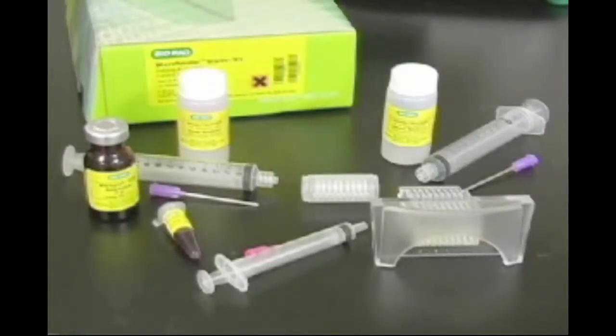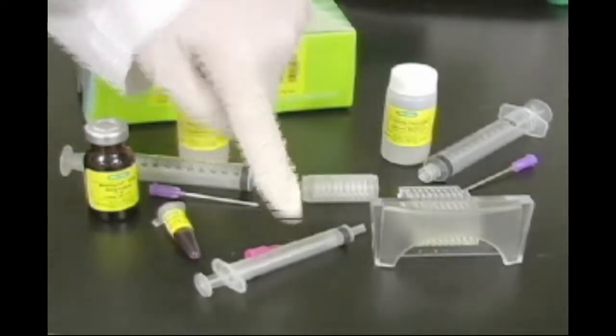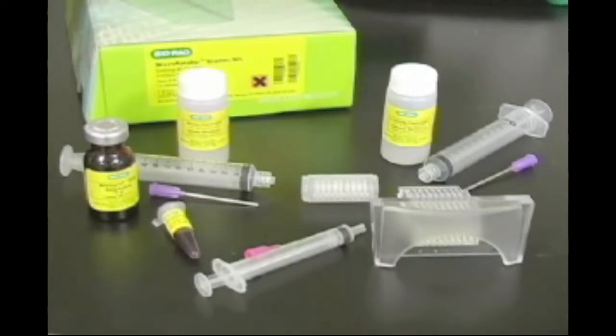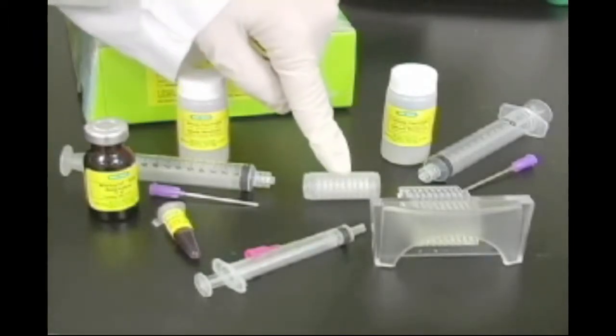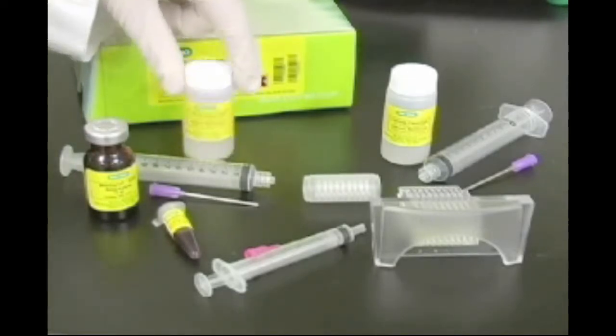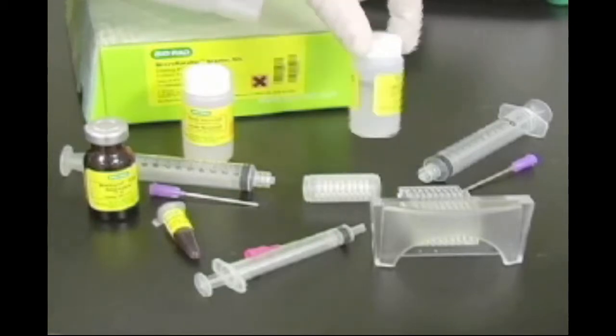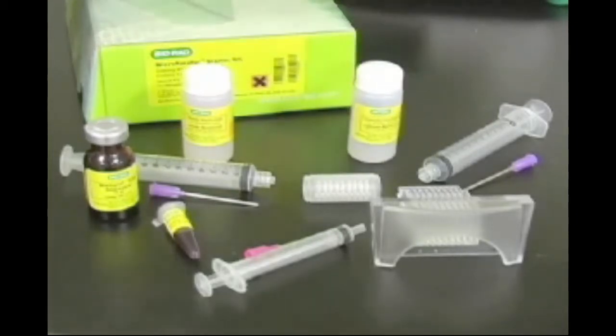In this video we will be using the Micro Rotifor starter kit, which includes two 10 milliliter syringes and a 3 milliliter syringe, a focusing chamber, anode and cathode electrolyte solutions that each contain two equilibrated membranes, Biolyte ampholytes pH range 3 to 10, and protein sample and a harvesting tray.